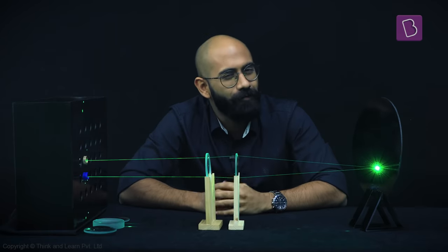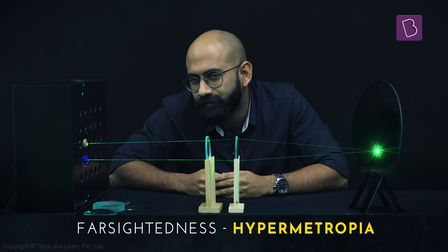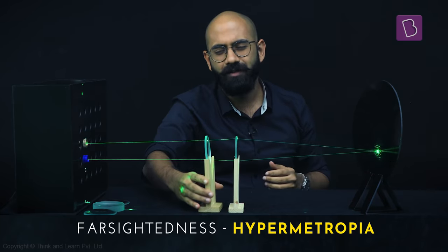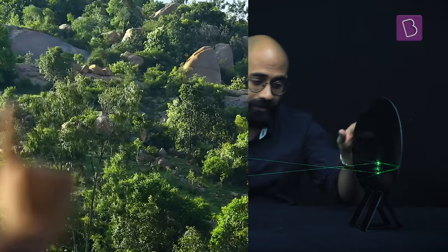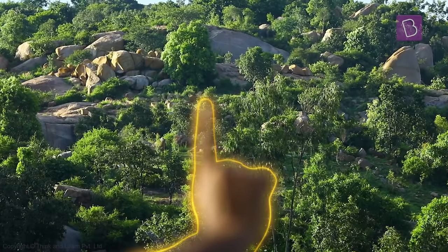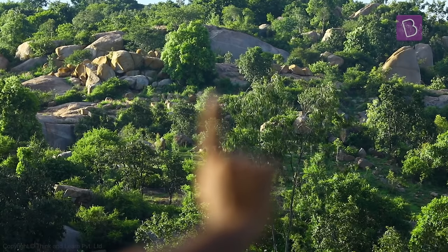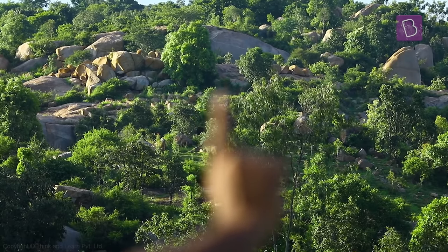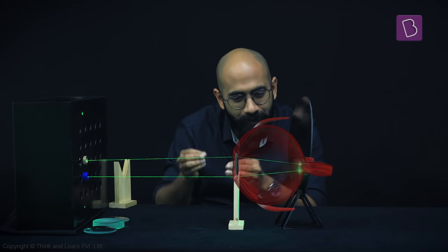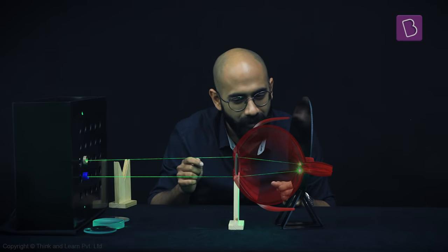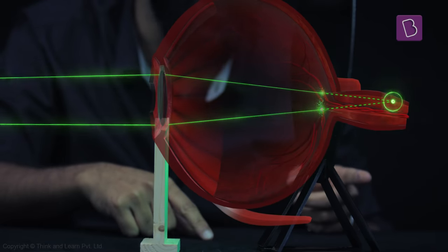So the other type of common defect is called farsightedness or hypermetropia. And this generally occurs when people get a little older. So what happens in this case is that when they see objects that are close by, they appear blurry and objects that are far off appear clear. Now when you look at their eye, this is what happens. So when these people look at objects that are close by, those rays get converged to a point behind the retina.